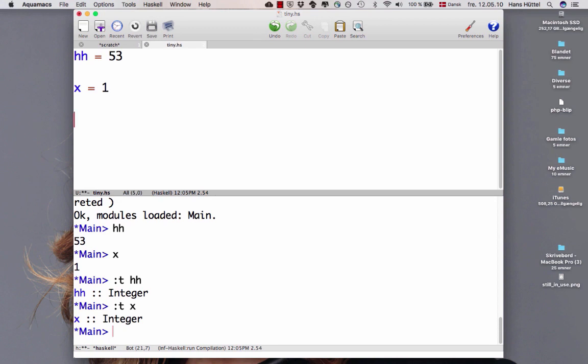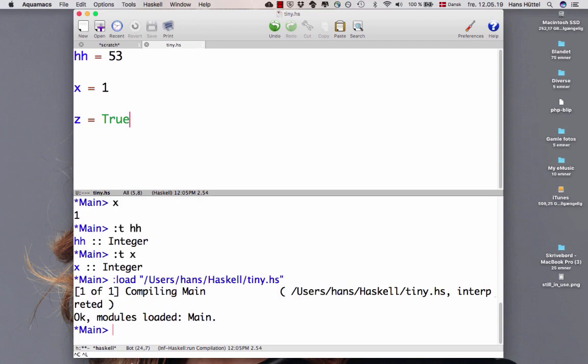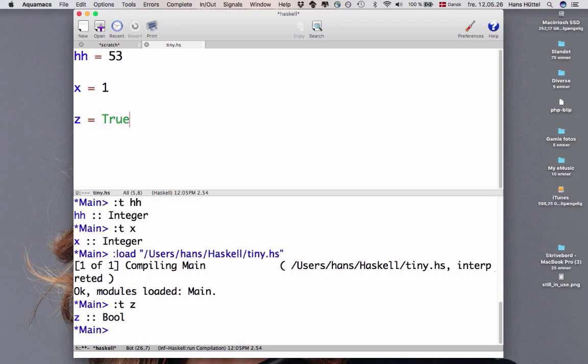Now let's make things a little more interesting. Let's have a variable set that we set to true. Let's load the modified program. What's the type z? It's bool so it seems like we've got booleans as well.